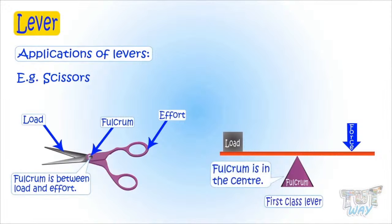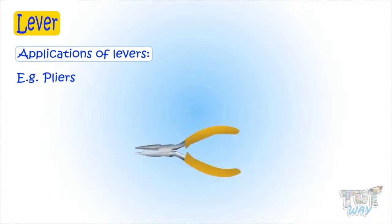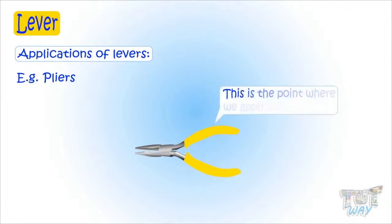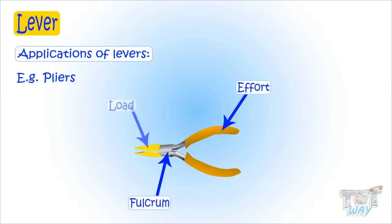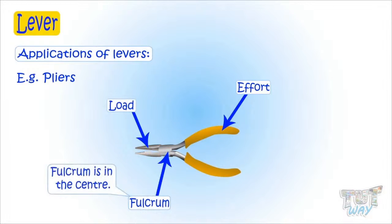Here we have another object of this kind — it is a pair of pliers. This is the point where we apply force, so this is effort. And this is the fixed point, so it's the fulcrum. And this is where the applied force acts on the object, so this is load. Again, fulcrum is in the center here, so this too is a first class lever.